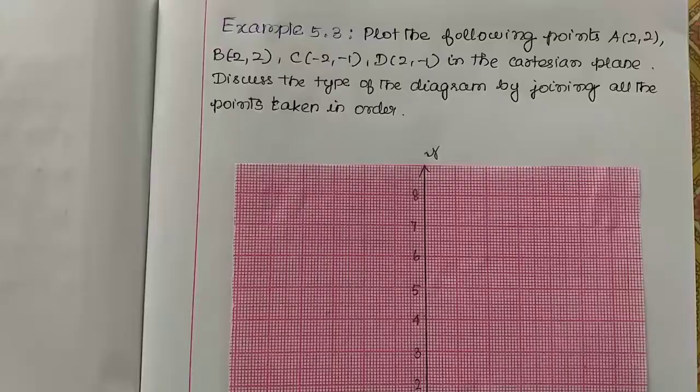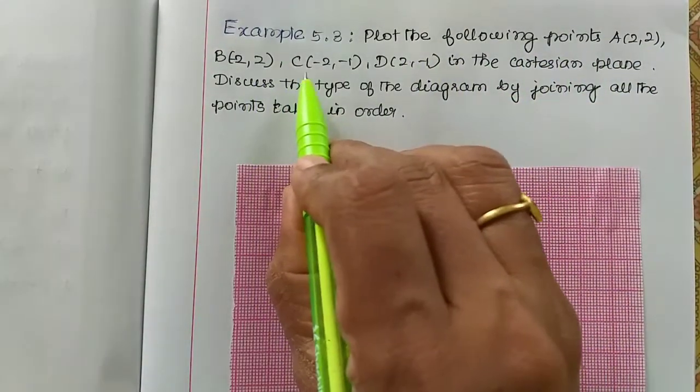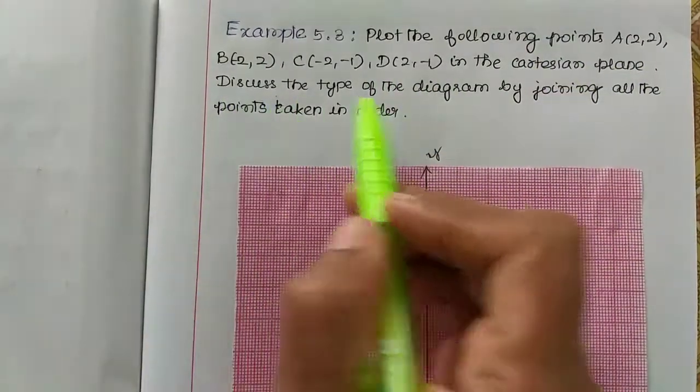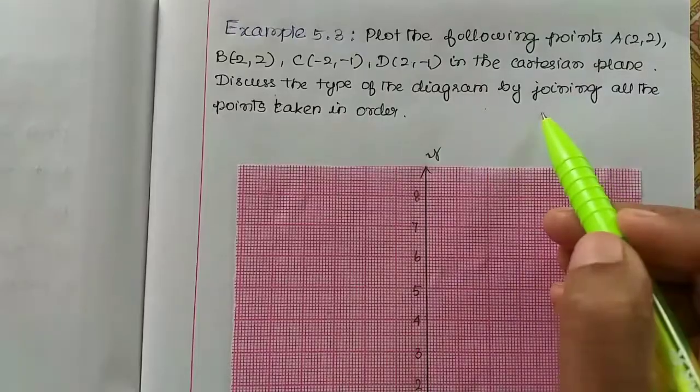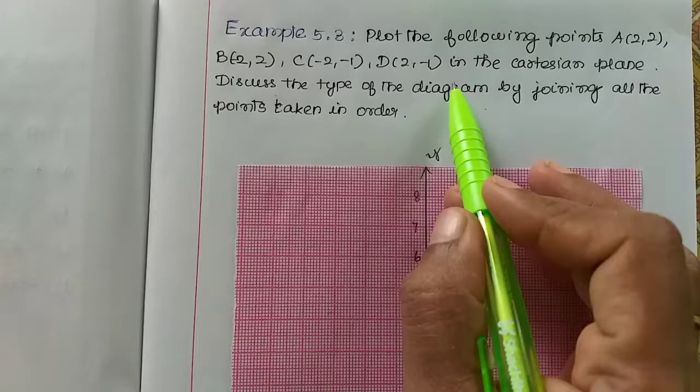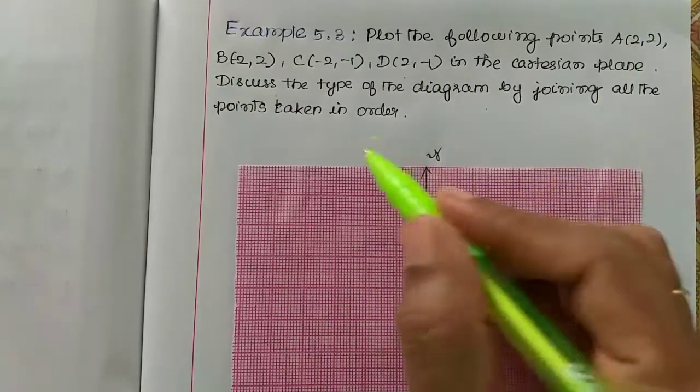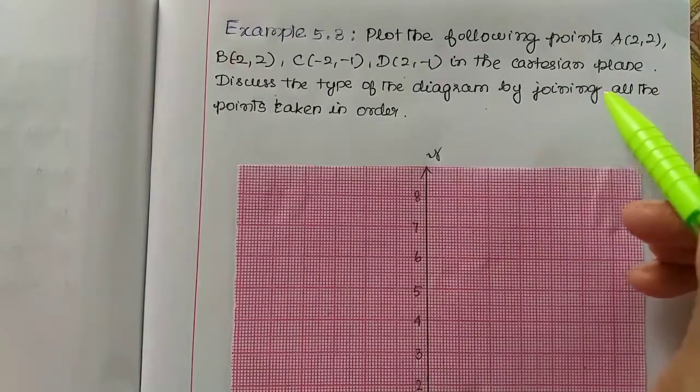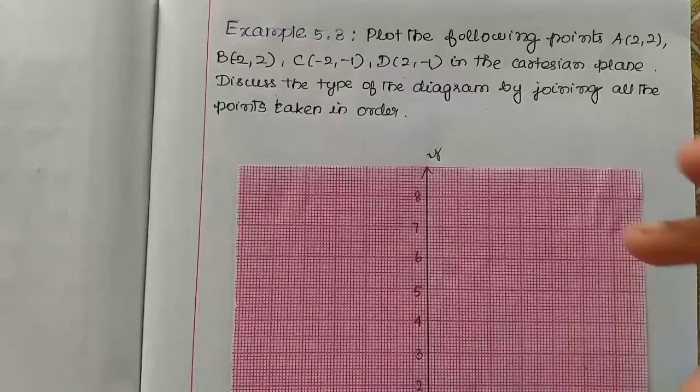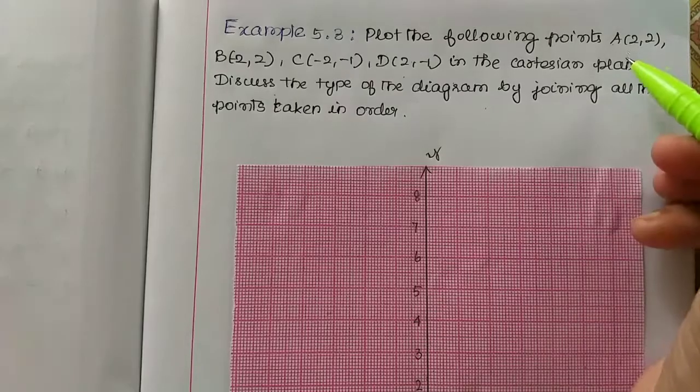Example 5.3: Plot the following points A(2,2), B(-2,2), C(-2,-1), D(2,-1) in the Cartesian plane. Discuss the type of diagram by joining all the points taken in order. You have 4 points. You can plot them in order A, B, C, D and join the points in order to discuss what shape it forms. First we have to plot the points.